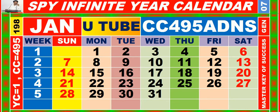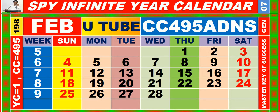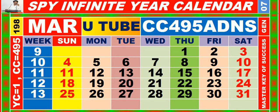Calendar for the month of January, having calendar code equal to 4, 9, 5, ADNS. Calendar for the month of February, having calendar code equal to 4, 9, 5. Calendar for the month of March, having calendar code equal to 4, 9, 5.